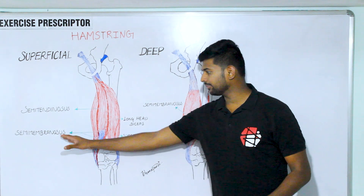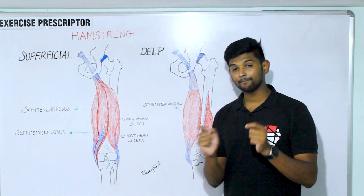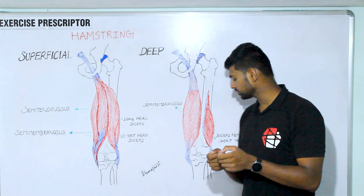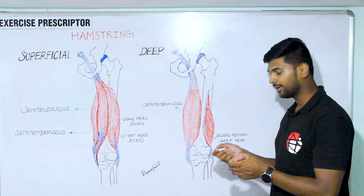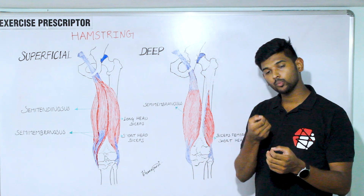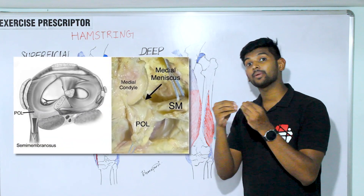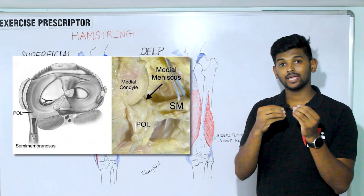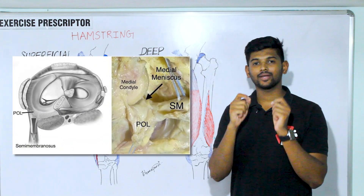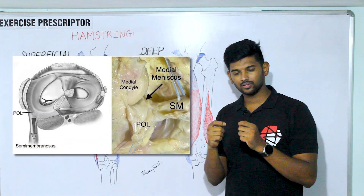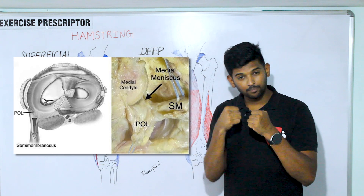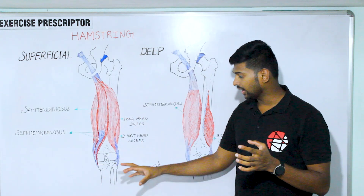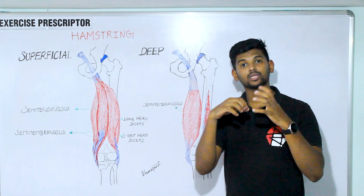Semimembranosus is also attached to the medial meniscus. Semimembranosus facilitates the posterior movement of the medial meniscus during knee flexion, helping to reduce and prevent excessive compression of the medial meniscus between the femur and tibia during knee flexion.